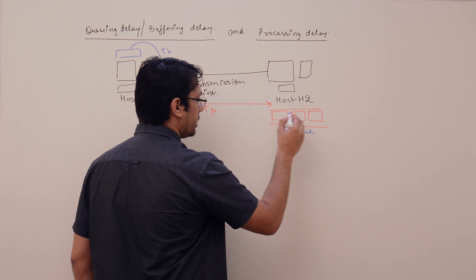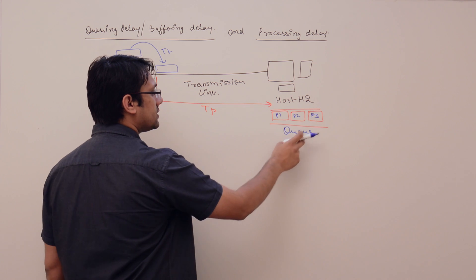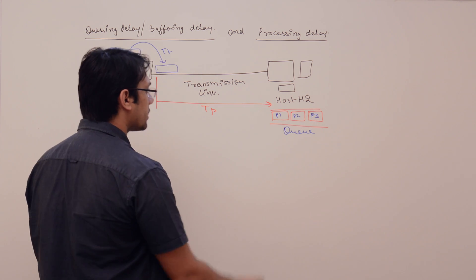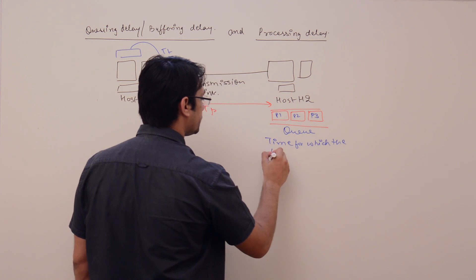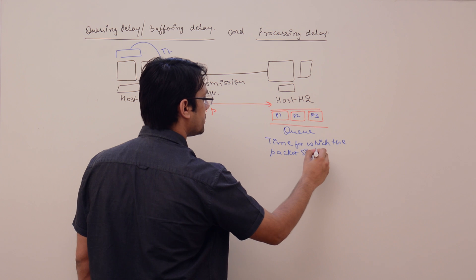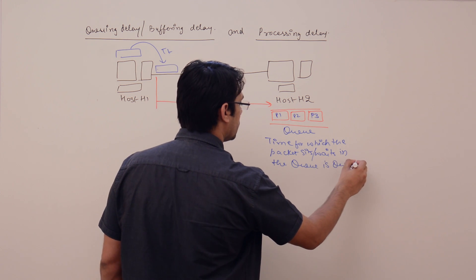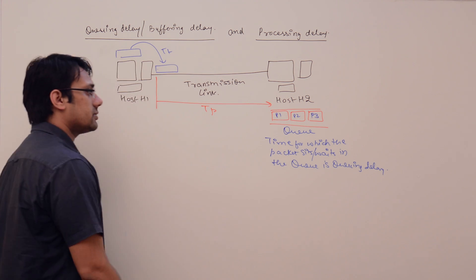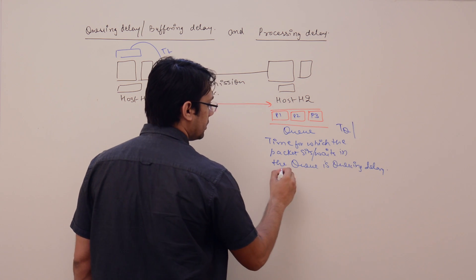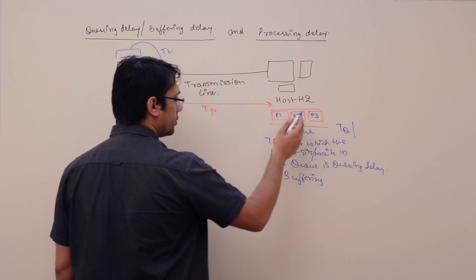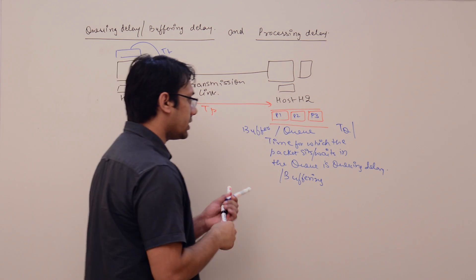This is the queue, with packets P1, P2, and P3. The time for which a packet sits or waits in the queue is called the queuing delay. We generally represent the queuing delay as TQ, and it is also called the buffering delay, represented as T_buffer.